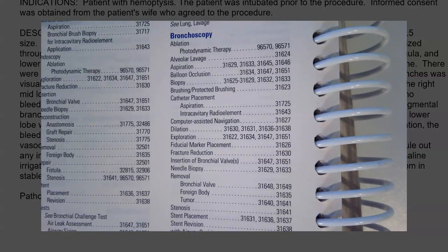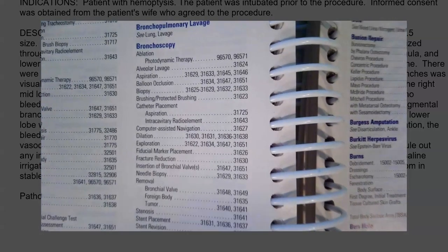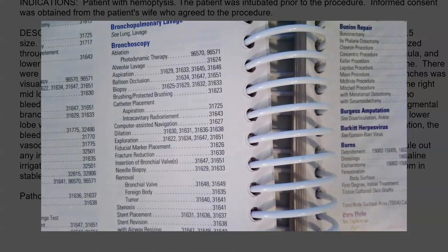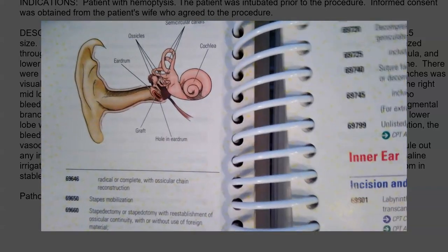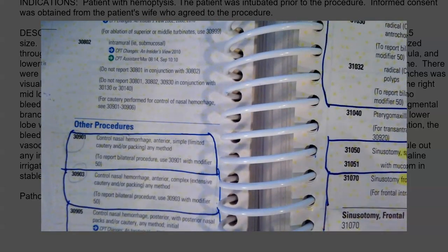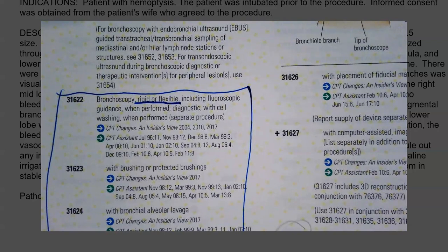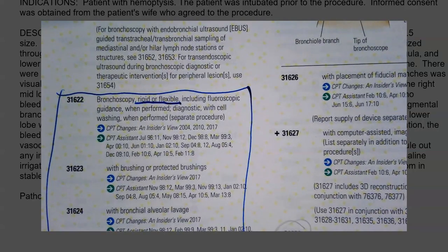The index gives us 31622, 31634, 31647, and 31651 to look up. Don't forget, use your little flap that you can put in to hold your place. Then we're going to go over and look up those codes that were in that particular range to see which code is going to best support our documentation. The first code is 31622, which is a bronchoscopy, rigid or flexible, including fluoroscopic guidance when performed, diagnostic with cell washing when performed. We have that. But don't stop at the first code — check out the rest.